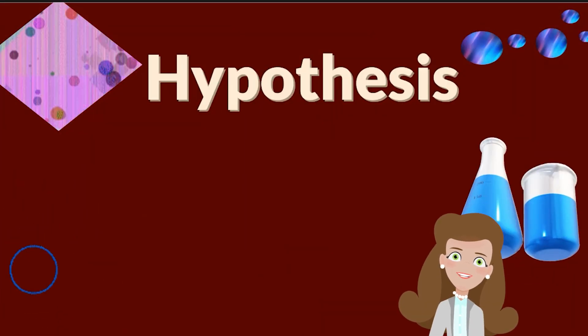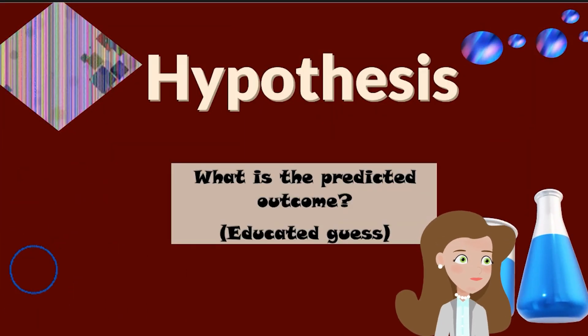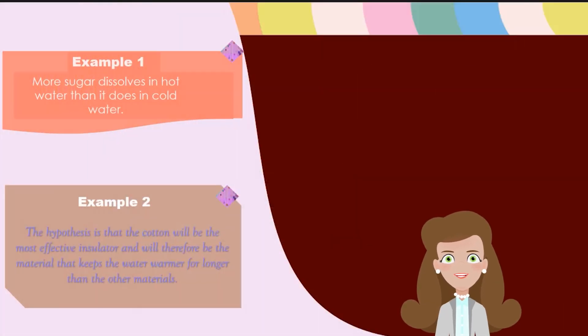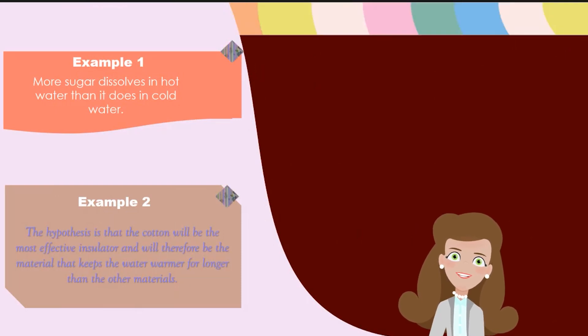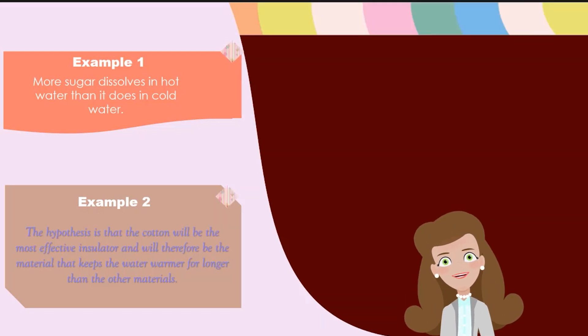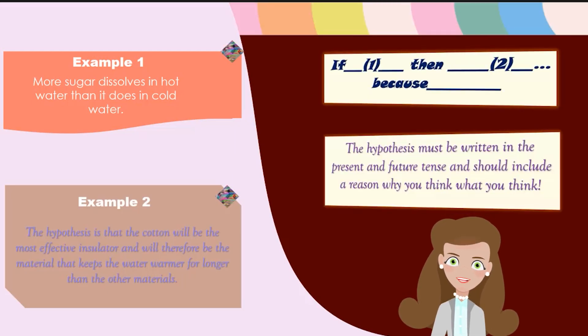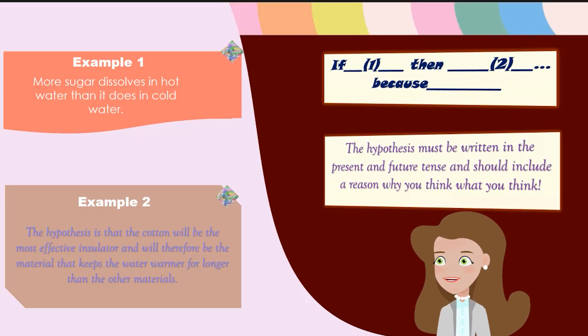Next we have the hypothesis, which is a predicted outcome or an educated guess. An example would be more sugar dissolves in hot water than it does in cold water. The hypothesis is that the cotton will be the most effective insulator and will therefore be the material that keeps the water warmer for longer than the other materials. So a good idea would be to use if, then, because statements. So if the water is hot, then more sugar will dissolve because sugar particles are more soluble in hot water. It is an explanation of what you think might happen after you have conducted the experiment.